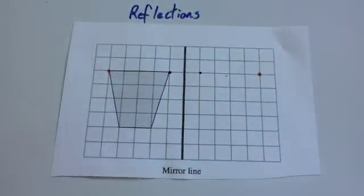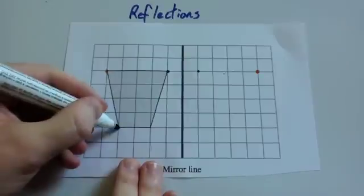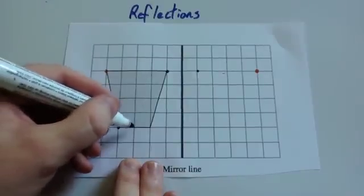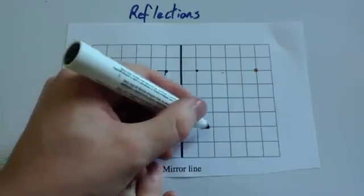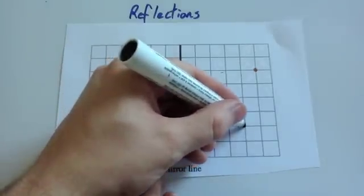Let's look at another point. Let's look at this one down here. So from here, you'd go 1, 2, 3, 4. So you're going to go 1, 2, 3, 4.